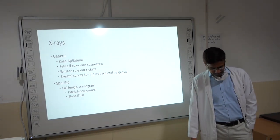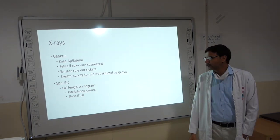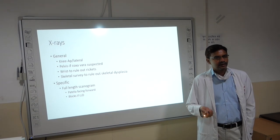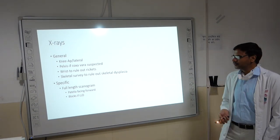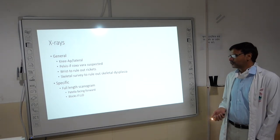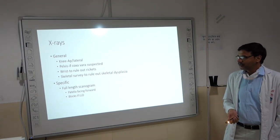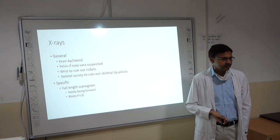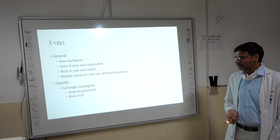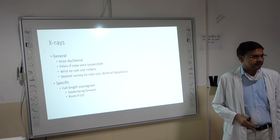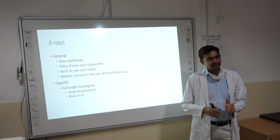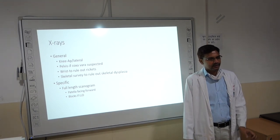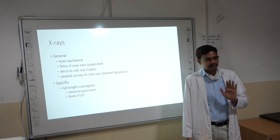Investigations: general X-rays include knee AP and lateral to look for epiphyseal dysplasia, metaphyseal problems, signs of rickets, signs of infection, or previous trauma. If coxa vara is suspected, take X-ray of the pelvis with both hip joints. Take wrist X-rays to rule out rickets and a skeletal survey to rule out dysplasia. For specific X-rays, a full-length scanogram is essential — both lower limbs on one film from ASIS to the foot, with the patella centered, and any LLD equalized with blocks.